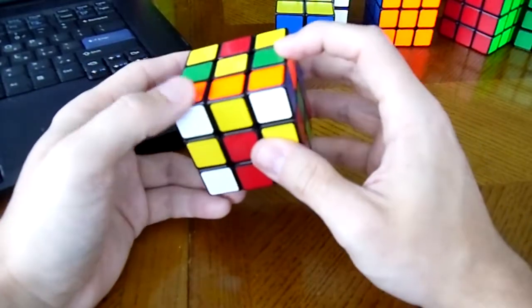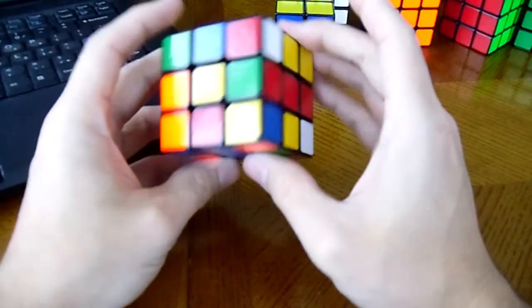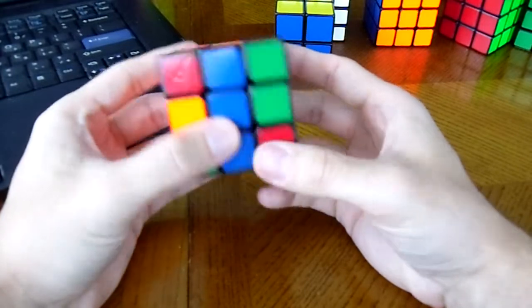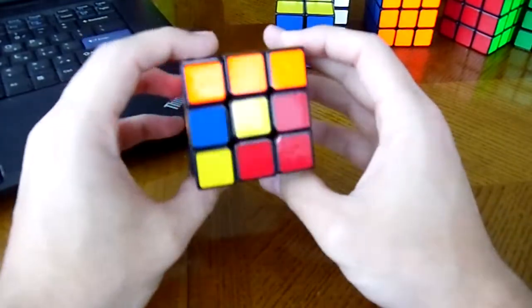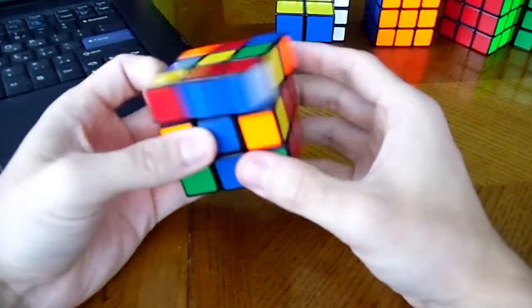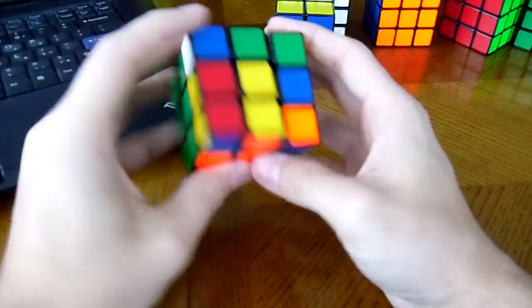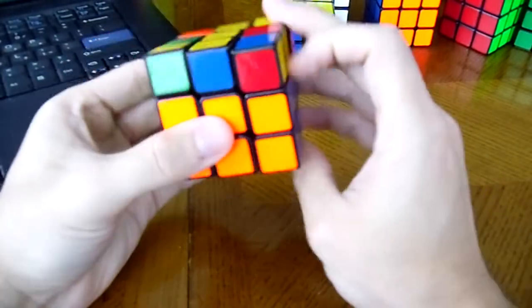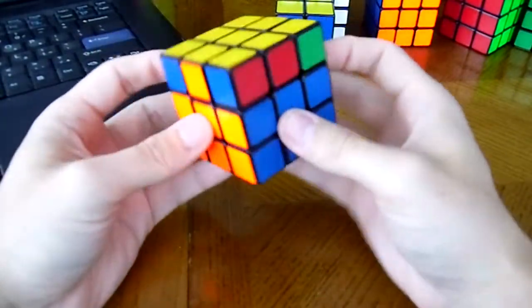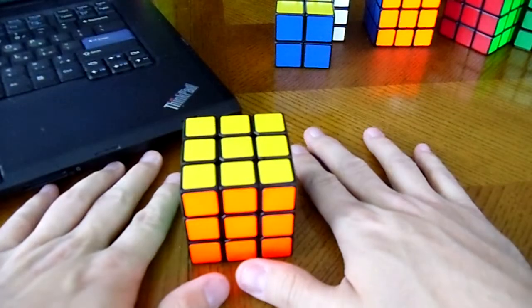And then from there, I notice that I've got this corner edge pair here, which can go back there. I also notice that I've got this corner edge pair here. Something I want you to notice is that I'm actually placing it without rotating the cube as much as possible. I've got this corner edge here, so I can bring that up. And then I've got this corner edge here and here. So I'm just going to kick that out and bring it back in. And then I've got my OLL and then my PLL. And that's that.